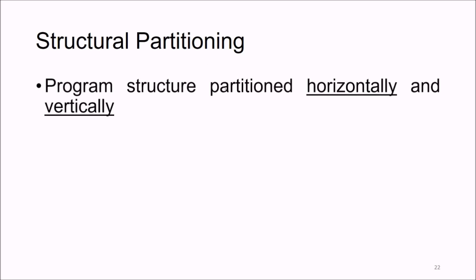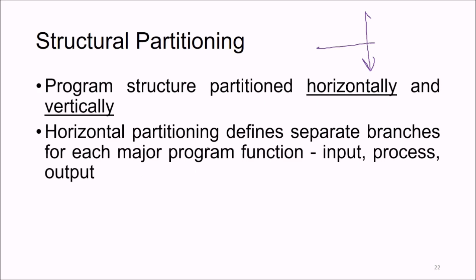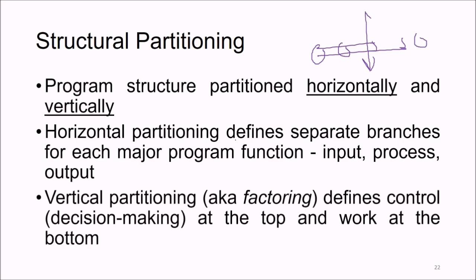Structural partitioning means the program structure can be partitioned either horizontally or vertically. Horizontal partitioning defines separate branches for each major program function — input, output, and process. Vertical partitioning, also known as factoring, defines control and decision-making at the top, with work at the bottom.